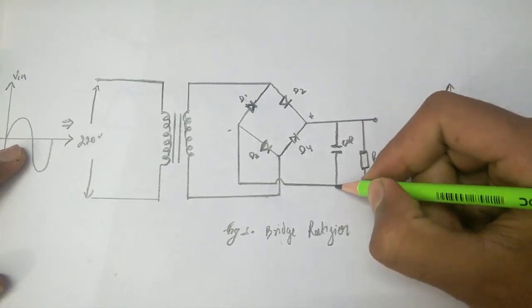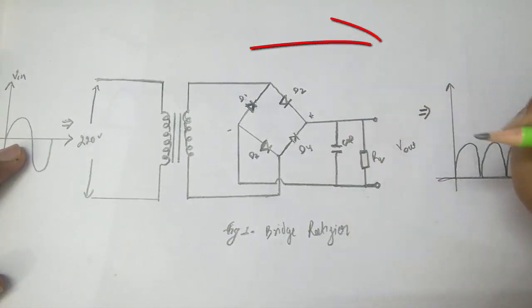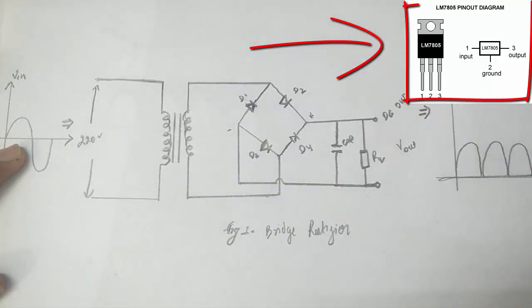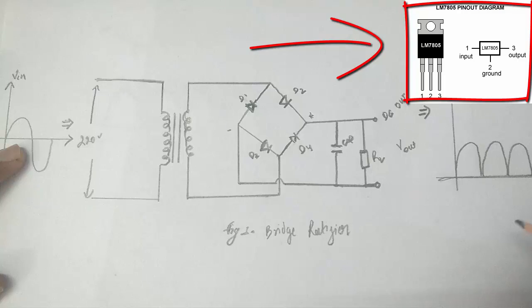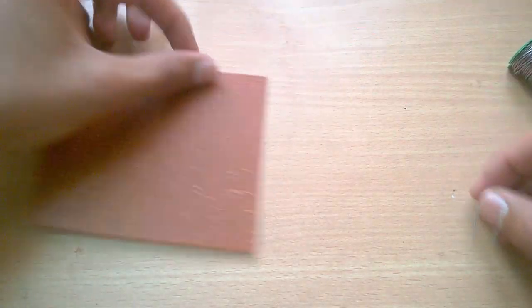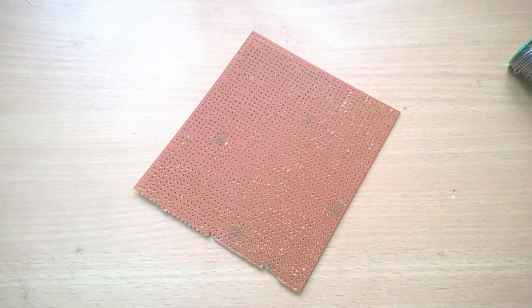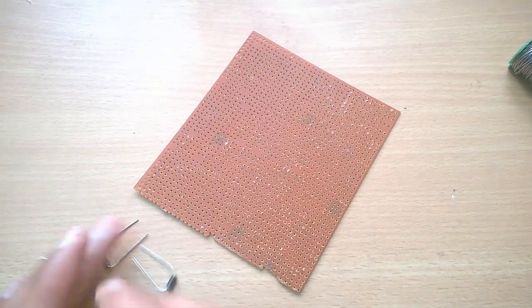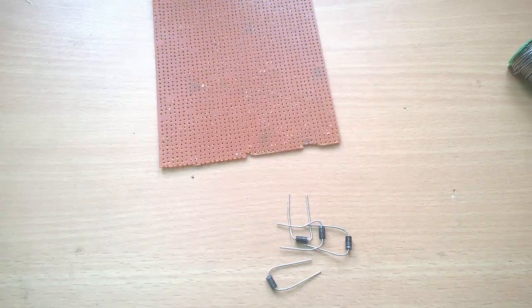After that, we use the voltage regulator to regulate the voltage at our desired level. You can see the pin configuration of the voltage regulator on screen. Now we are going to place the components and then do the soldering work.